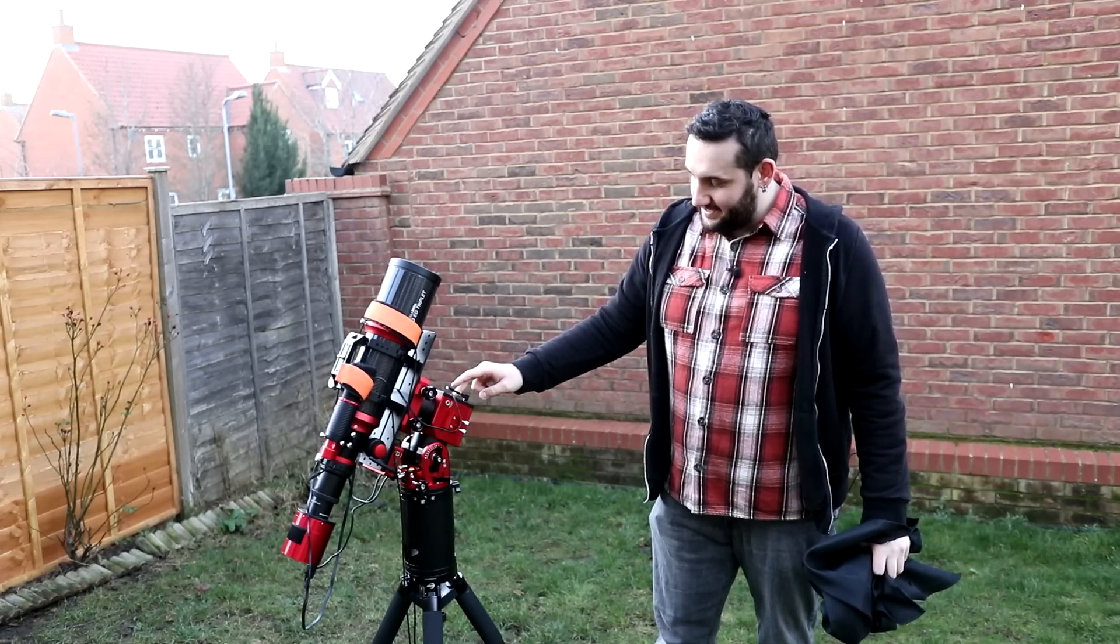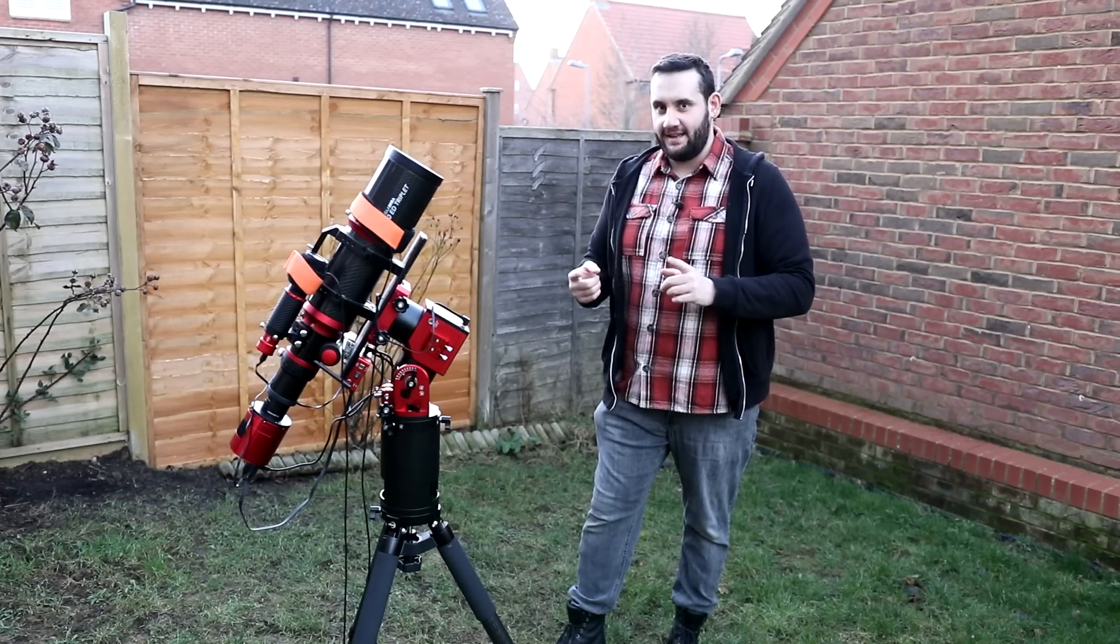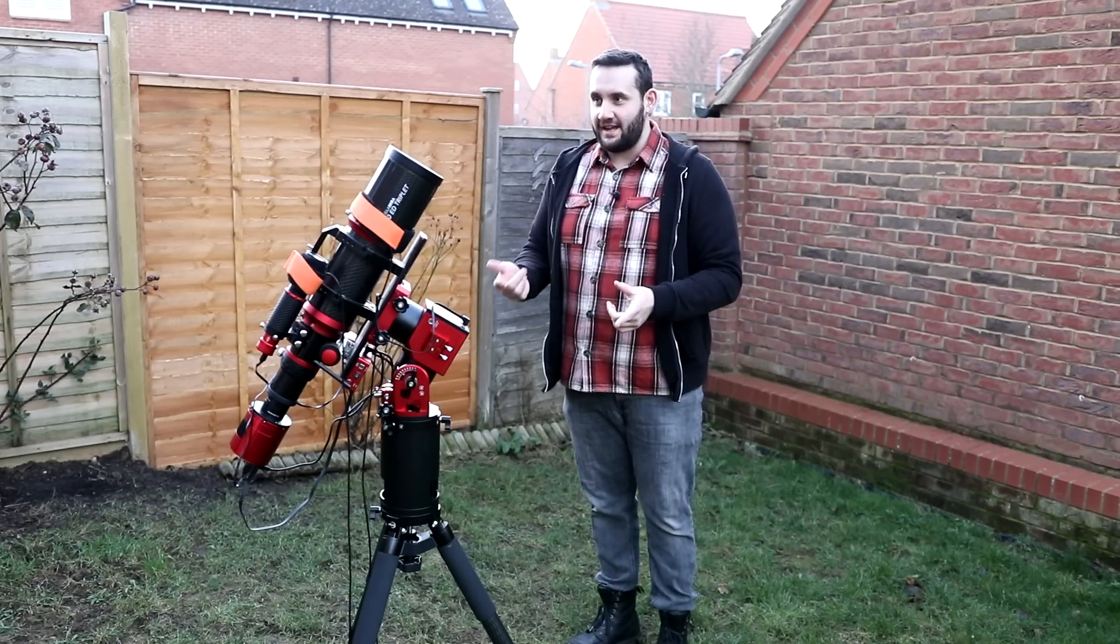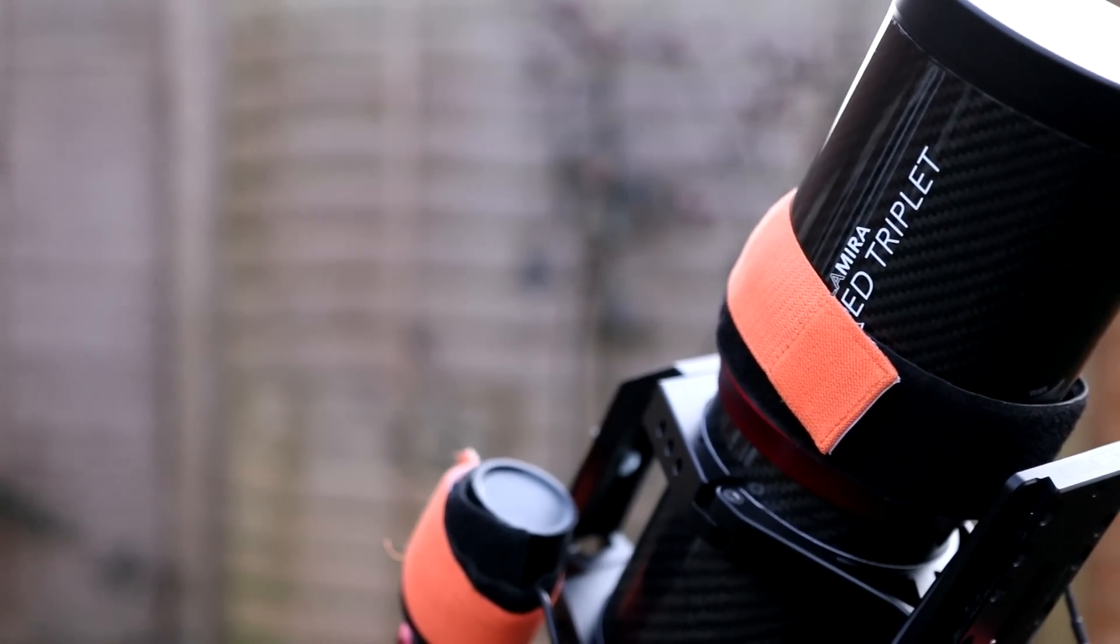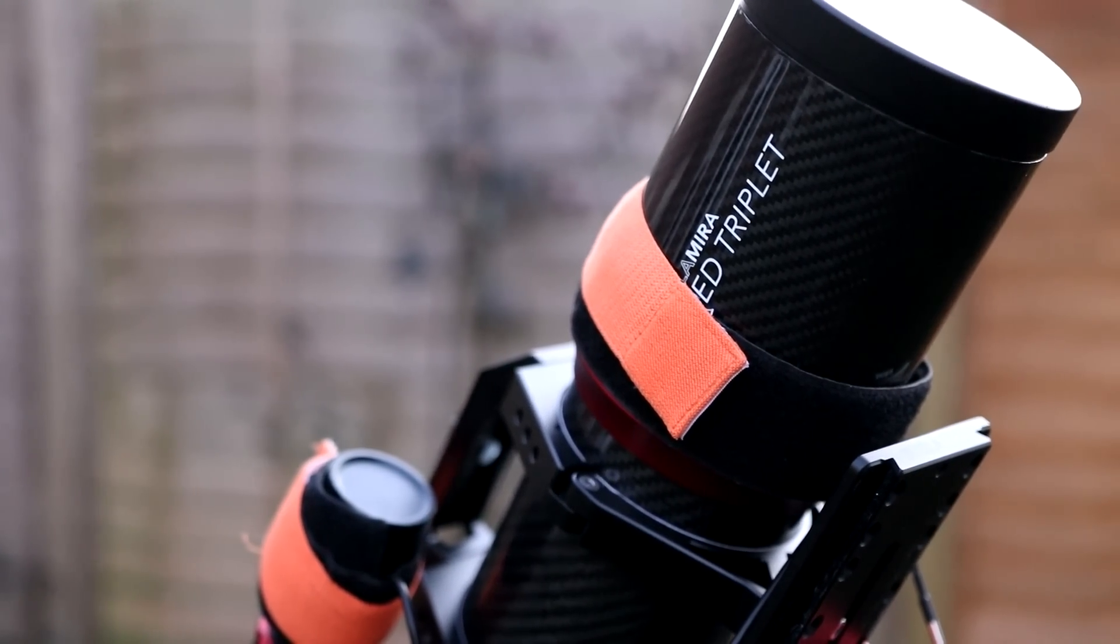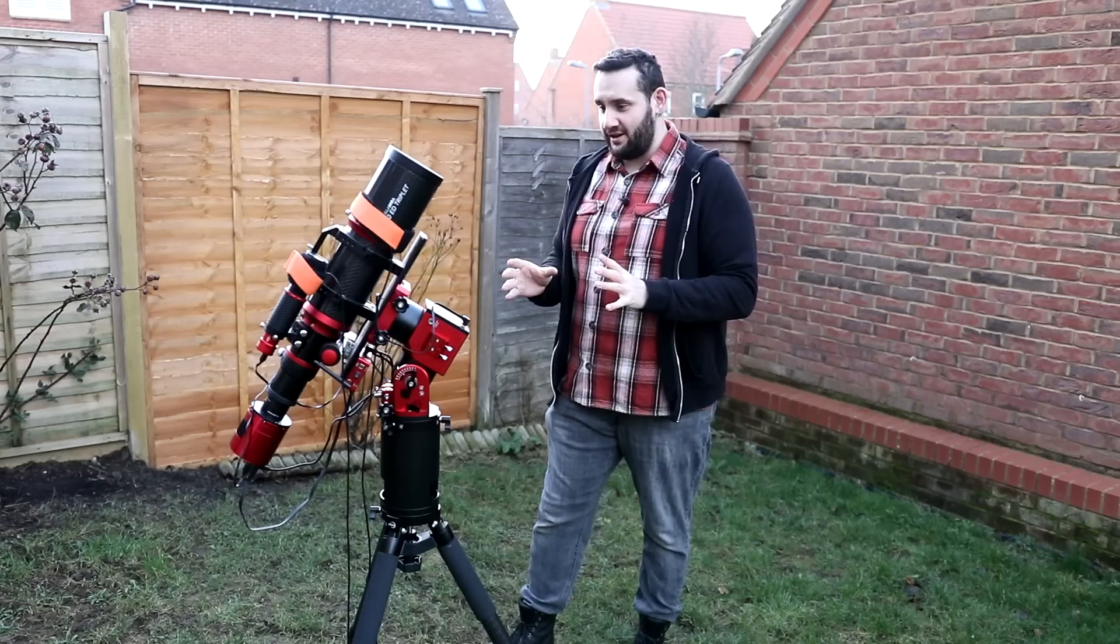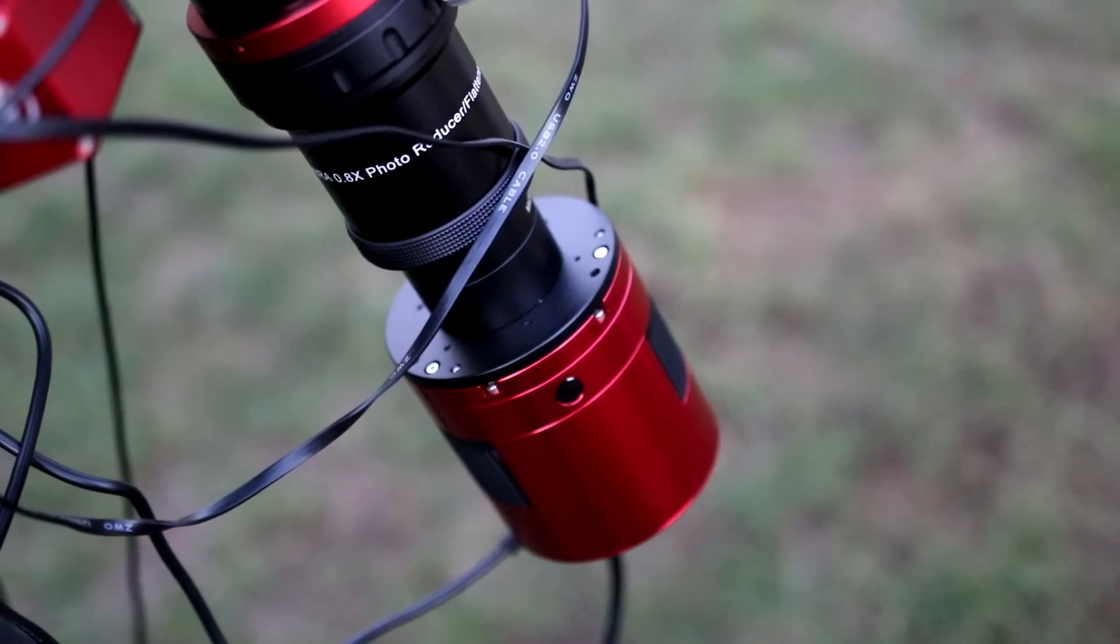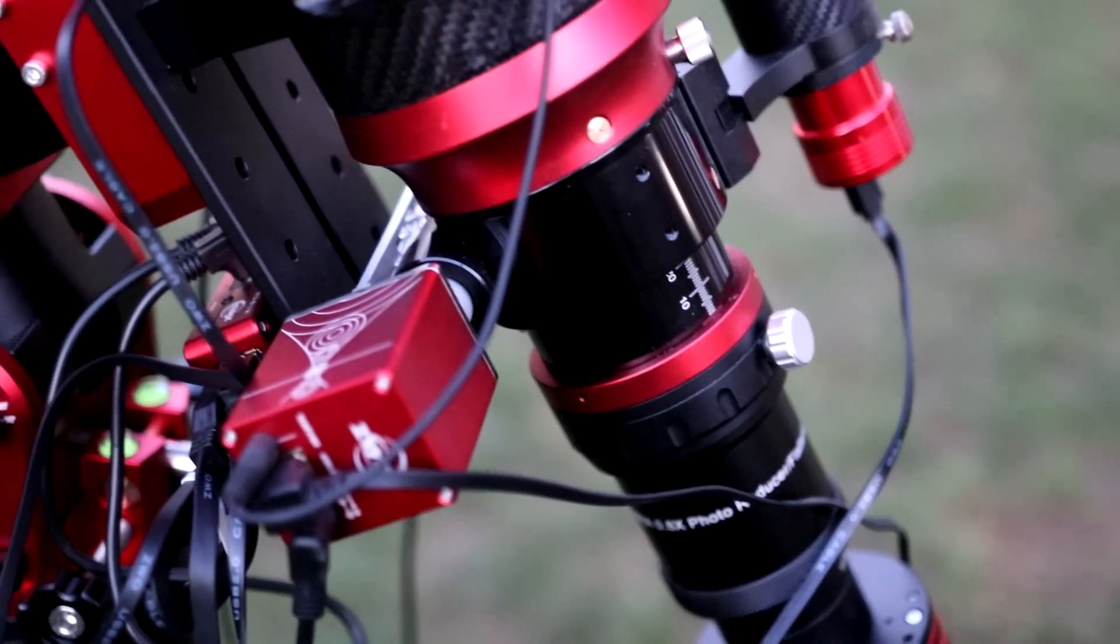mounted on the ZWO AM5 mount. So the Stellamira 90EDT is a triplet telescope. So it's my second triplet I've used, but my first actual triplet, it's 540mm focal length, 90mm aperture. So very exciting, I really like this telescope actually, I've been admiring the Stellamira series since they launched it. And obviously the AM5 has been making a stir since it started doing the rounds really.